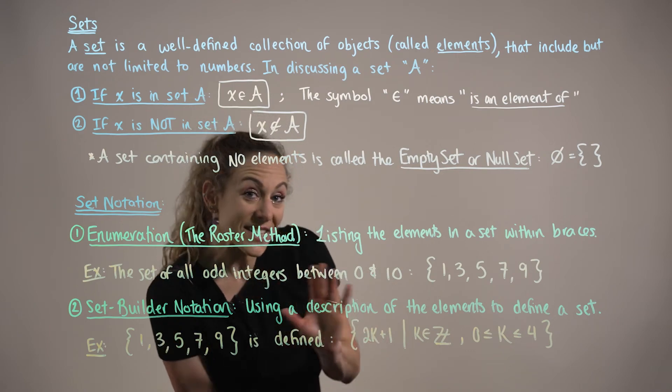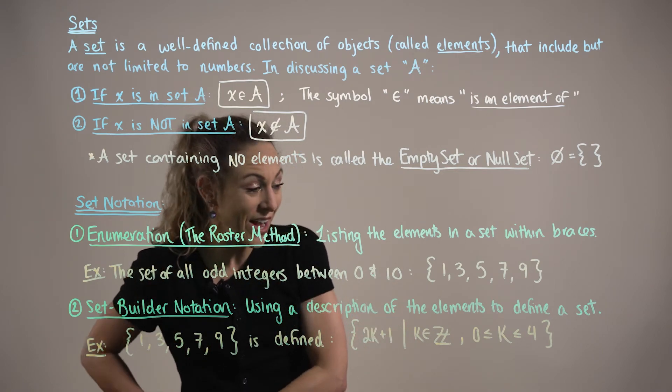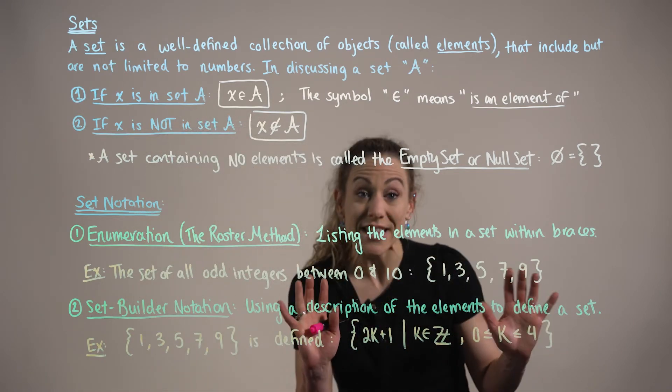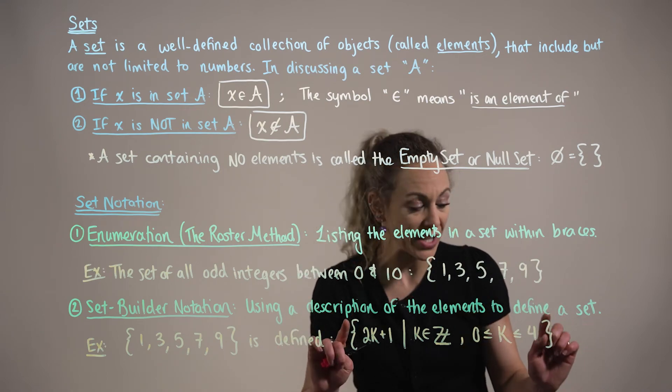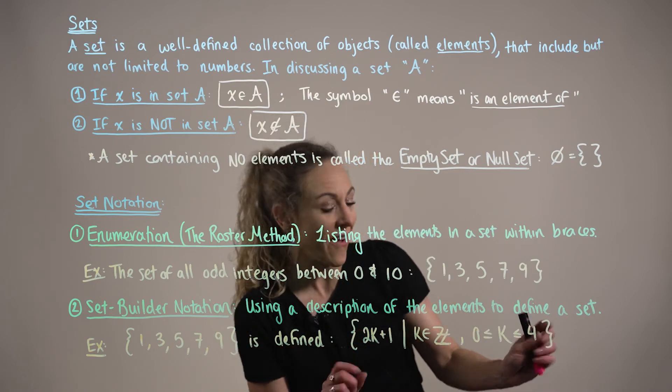Below is the set builder notation for the set of all odd integers between 0 and 10. In this case, with set builder notation, the braces represent that we are working with a set. So this says the set of.